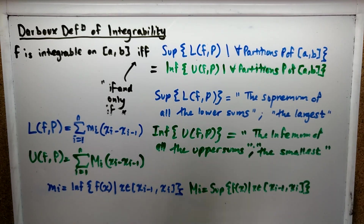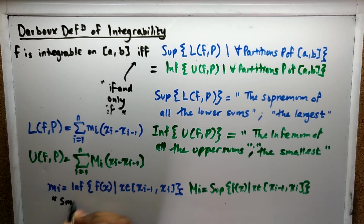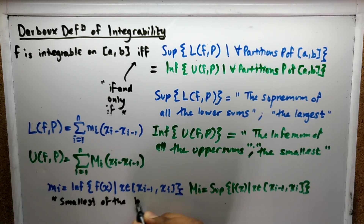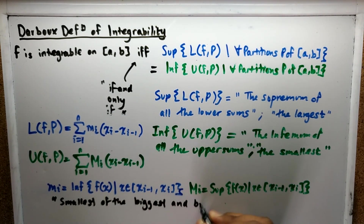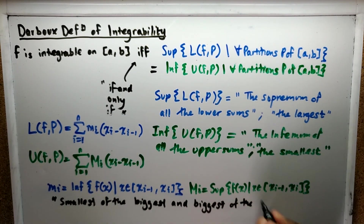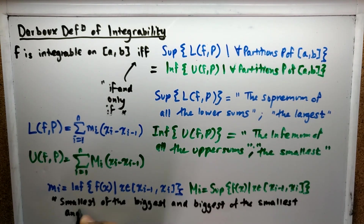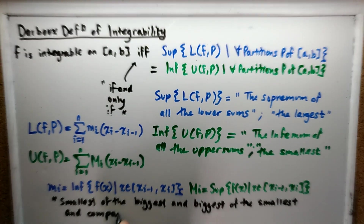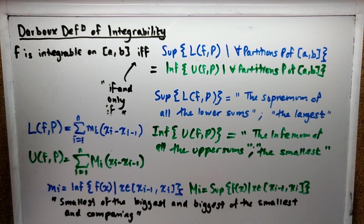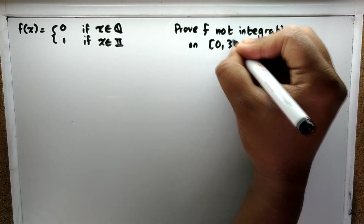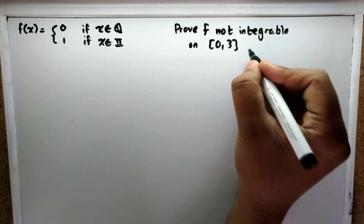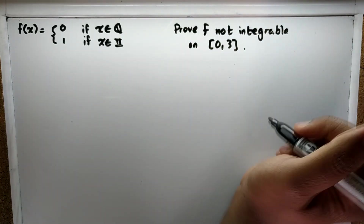In our proofs, what we will be doing is taking the smallest of the biggest possible values in each interval, and taking the biggest of the smallest possible values in each interval, and comparing them to see if they're equal to each other. We also use this to prove that things are not integrable.